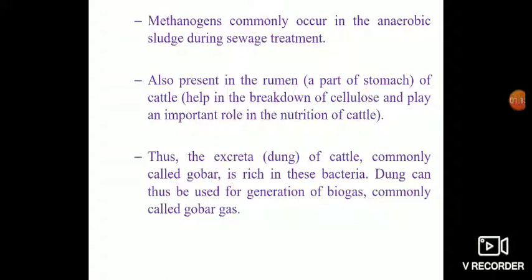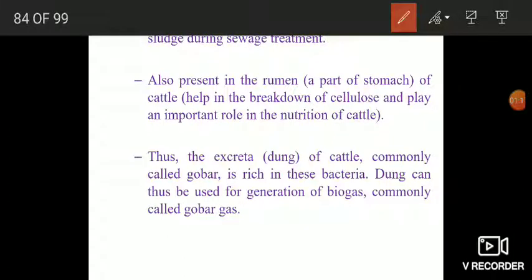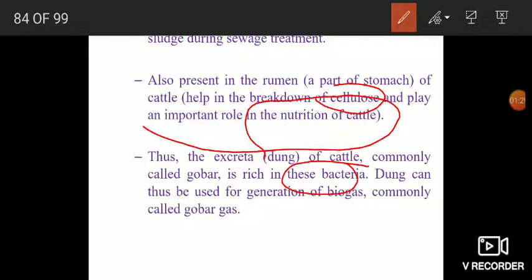They are also present in the rumen, which is a part of stomach of cattle, and inside the rumen they help in the breakdown of cellulose and thus play an important role in the nutrition of cattle. Thus we can say that the excreta of cattle, commonly known as gobar, is rich in these bacteria and thus we can use the dung of cattle for the generation of biogas.